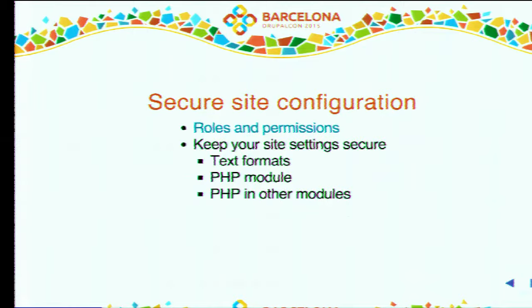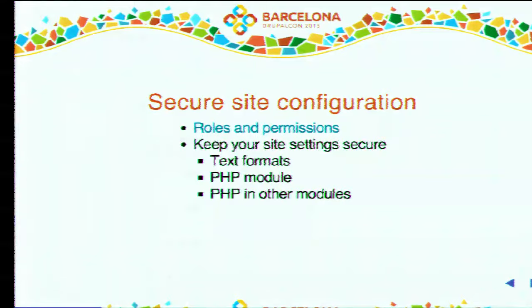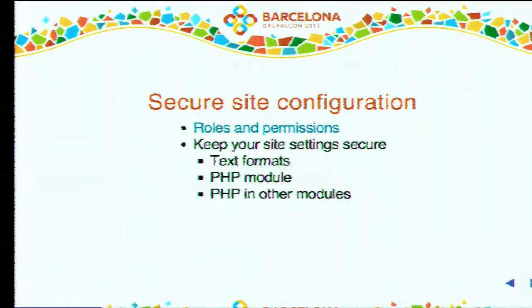Moving on to the Drupal layer — make sure your site is configured properly. Misconfiguration is a big vector for being hacked. Roles and permissions is one example, and there are many more. Text formats are another: if you misconfigure them or allow untrusted users to access risky text formats, there could be a vector there. The PHP module in Drupal 7 core should be avoided at all costs — make sure it's disabled or remove it from your code base entirely. Any contrib module that allows you to enter PHP code in the interface should also be avoided.